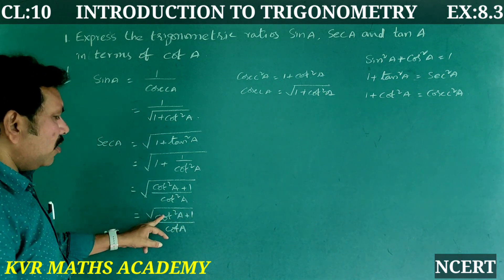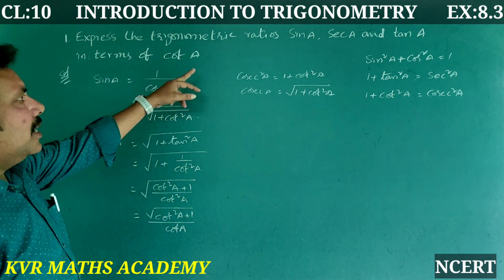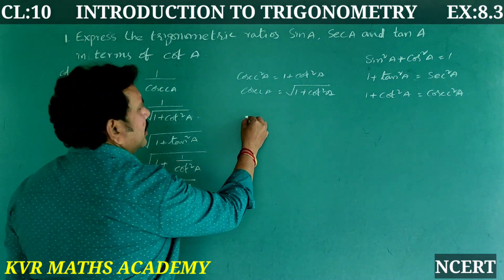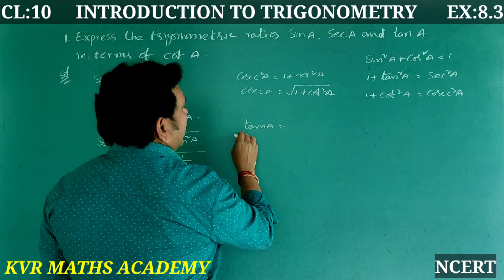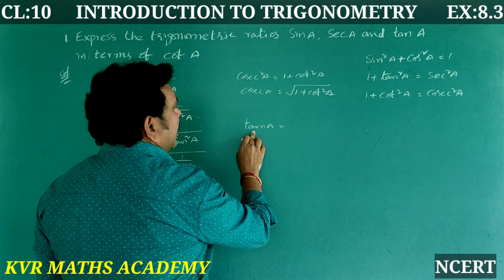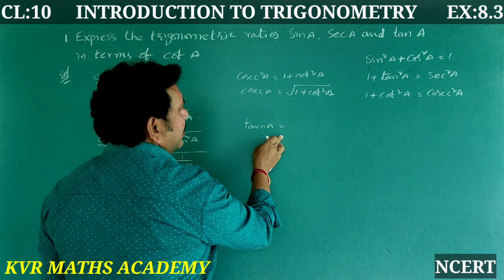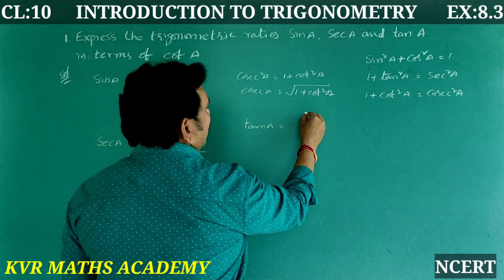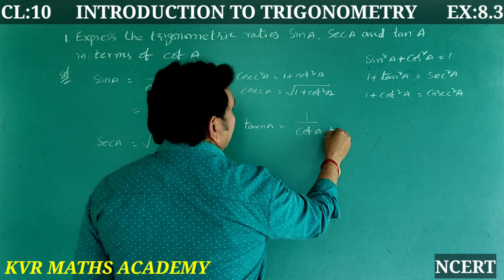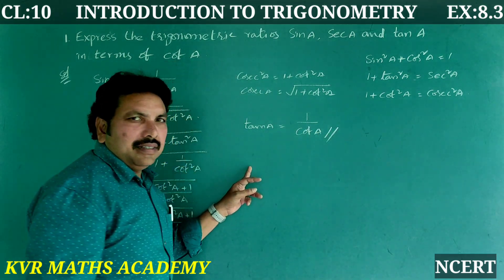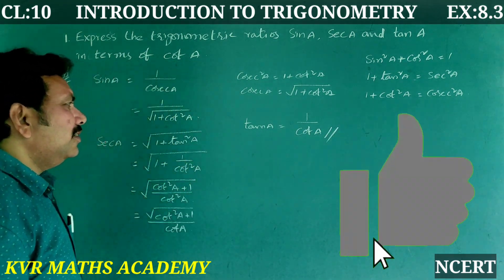So secant A in terms of cot A is √(cot²A + 1) / cot A. Next, tan A: since tan A is the reciprocal of cot A, tan A = 1/cot A. That is straightforward.